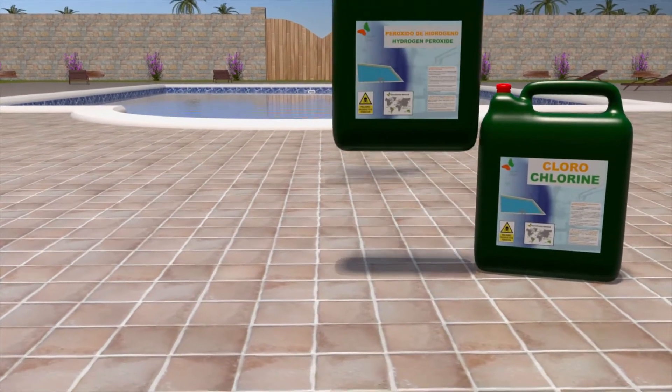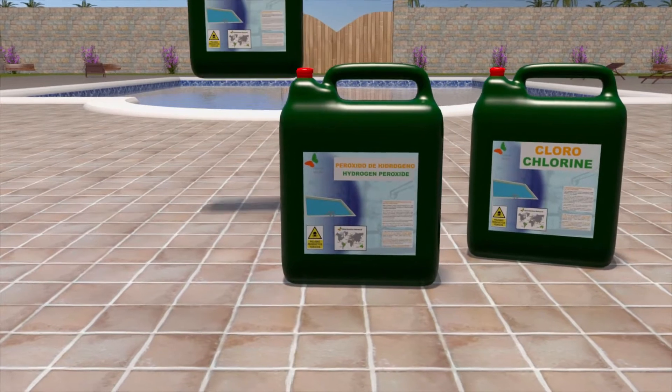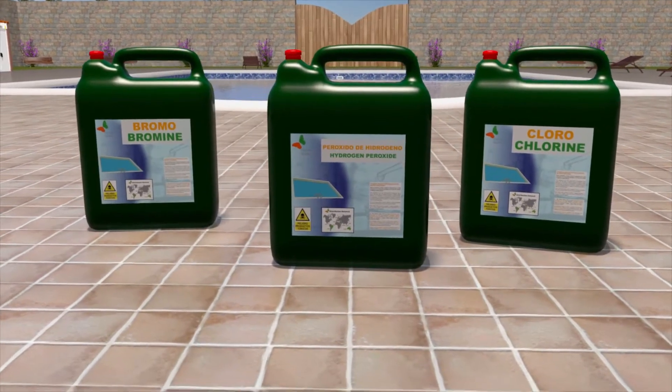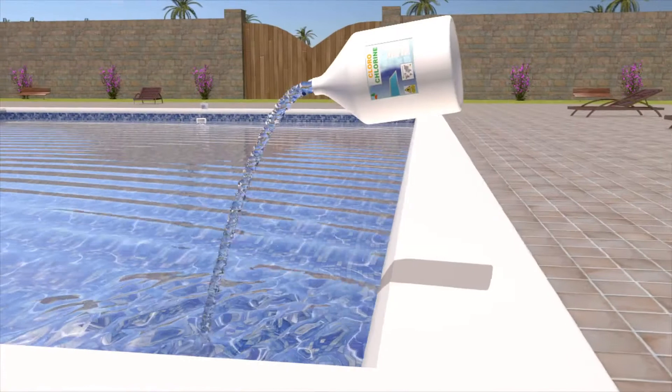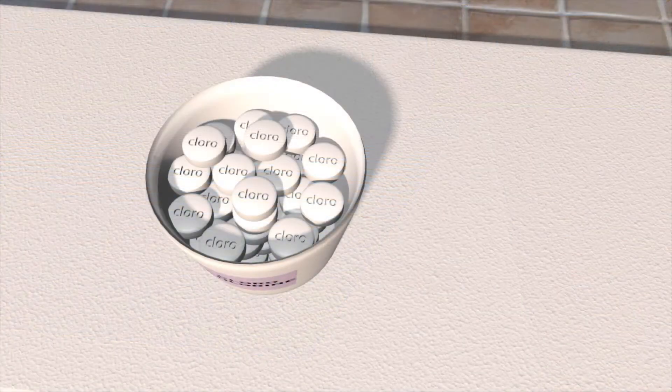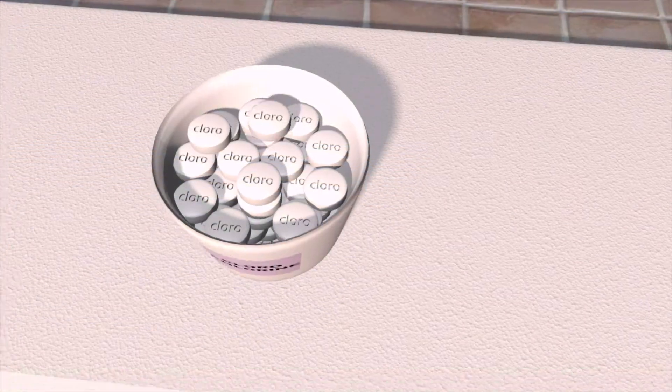The most common disinfectant systems are chlorine, bromine and hydrogen peroxide. Chlorine is most popular for domestic swimming pools and is easily available in tablet or liquid form.